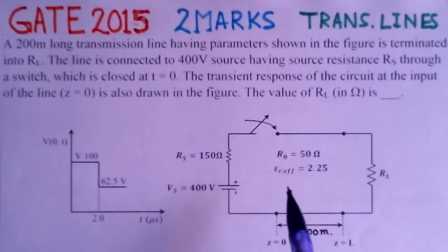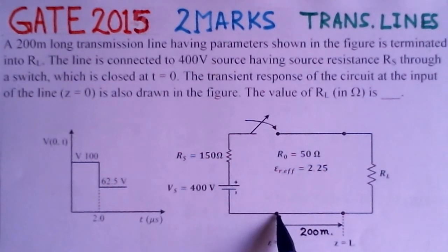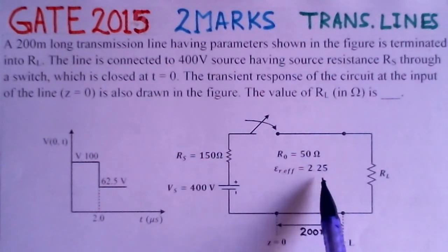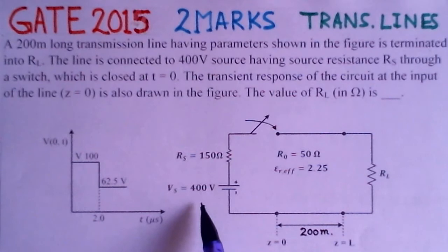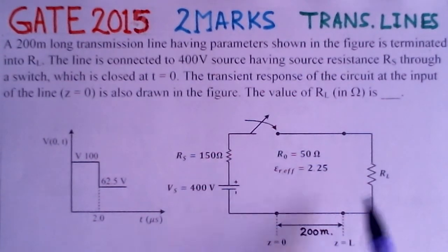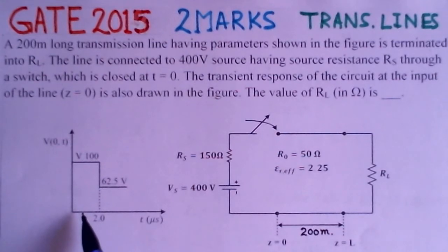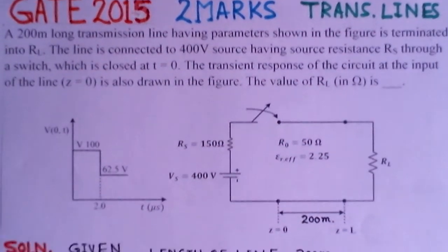If we see this problem, what we find there is a transmission line having a length of 200 meters and this is Z equals to zero and Z equals to L. These are the coordinates. And this transmission line is having characteristic impedance of 50 ohms and epsilon R effective, that means the dielectric constant of the line, is 2.25. Source resistance is 150 ohms and source voltage is 400 volts. And RL is the load connected. For this transmission line the transient response is given from T equals to zero to the time T here.